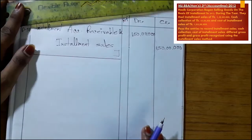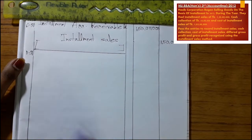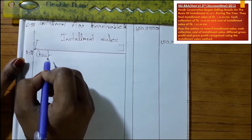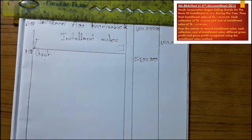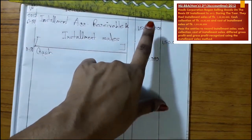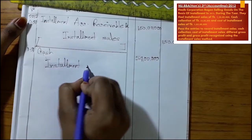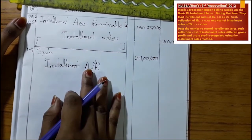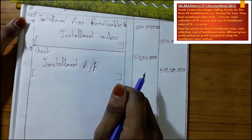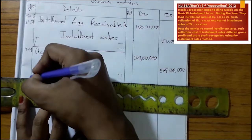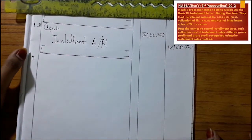For the cash collection entry, we debit Cash and credit Accounts Receivable to record the collection of cash. The cash collection amount is TAKA 54 Lakhs.